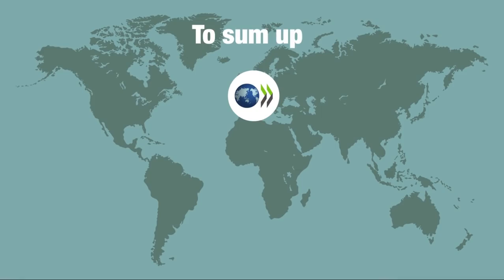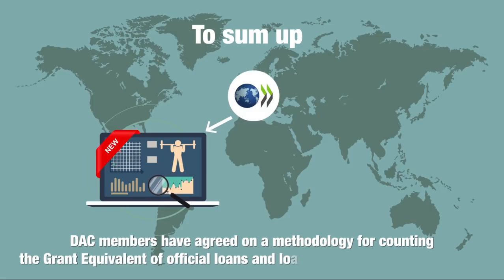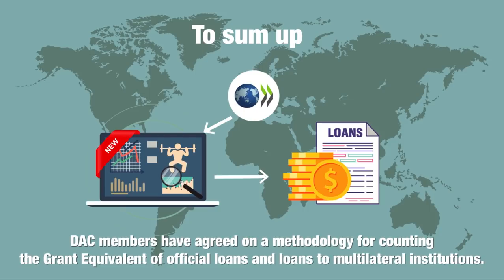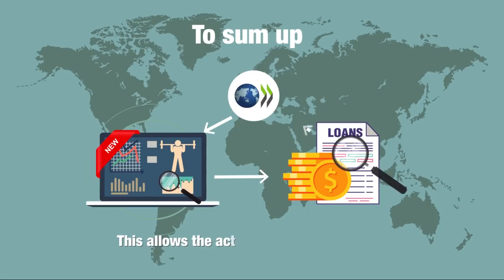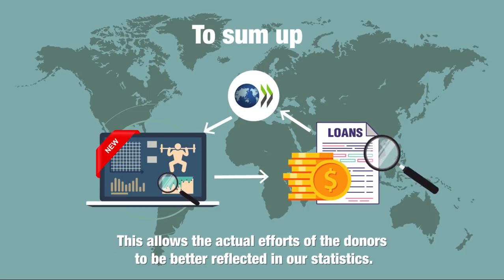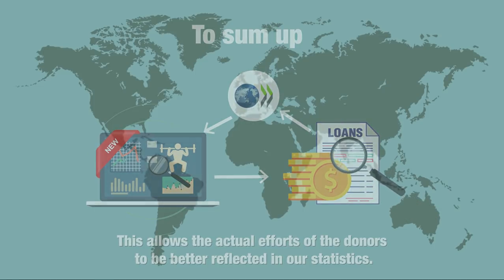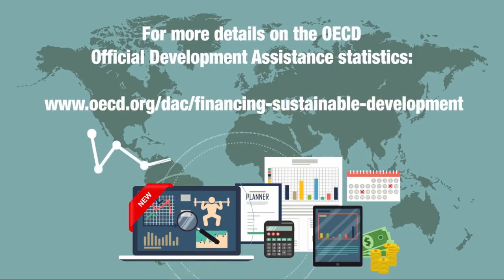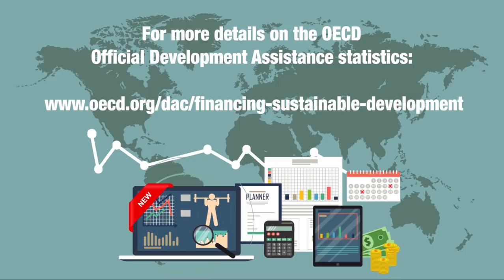To sum up, DAC members have agreed on a methodology for counting the grant equivalent of official loans and loans to multilateral institutions. This allows the actual efforts of the donors to be better reflected in our statistics. For more details on the changes in official development assistance statistics, please visit our website. Check in regularly for updates, webinars and blogs. You can also browse and download all of our data. Thank you for listening.